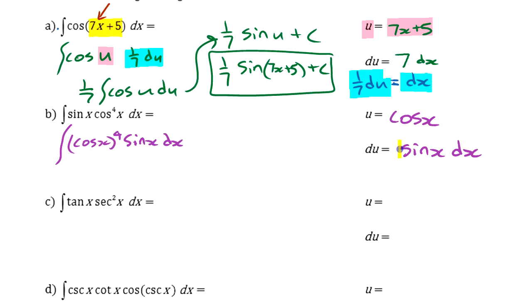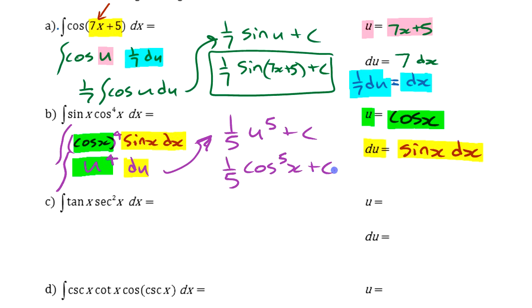So DU is sine x dx, and then we can do some replacements there. If we make sine x dx into DU, sine x dx becomes DU. If we take cos x, that's our U, cos x, that's going to be U here. So we have U to the 4th integral DU. Integral of U to the 4th DU is 1/5 U to the 5 plus C, or in other words, 1/5 cos to the 5th plus C.